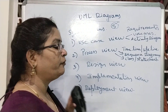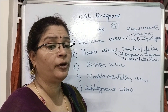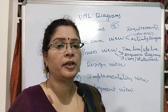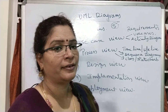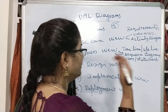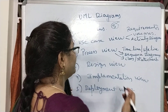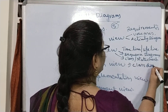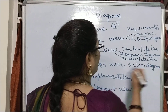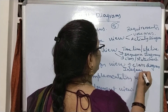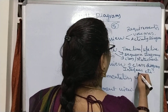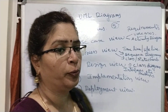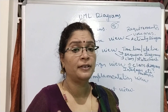Now coming to the design view. Design view means how the design can be done — how many abstractions are there within the system, how these abstractions are connected, and what are the various relationships among them. This entire thing can be clearly described using the design view, and the design view contains class diagrams, interfaces, and packages.